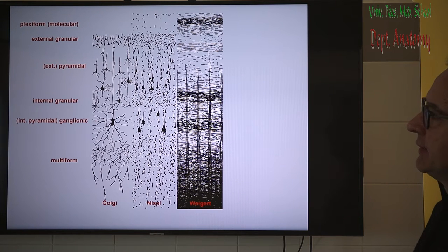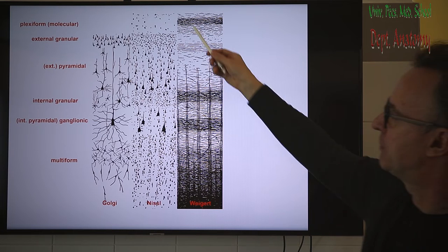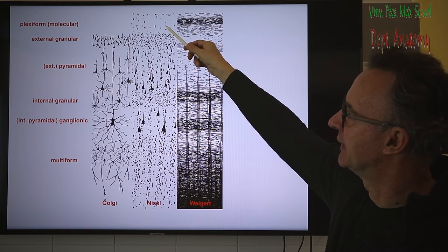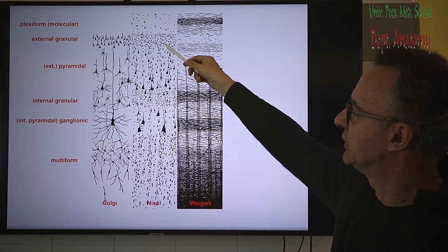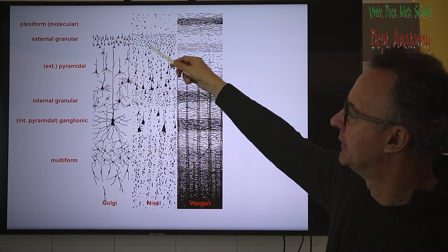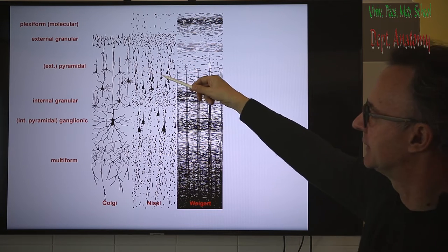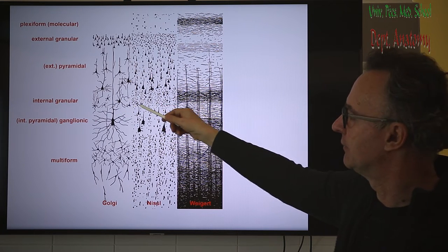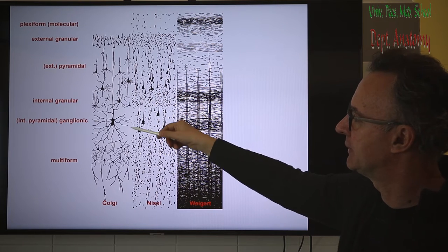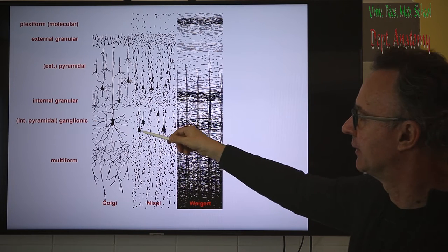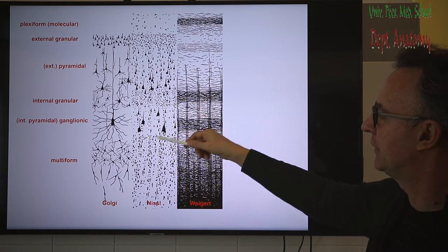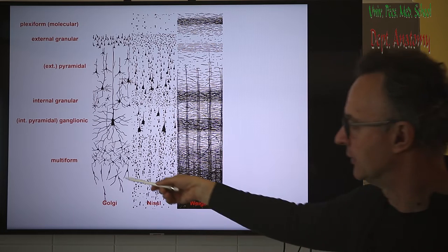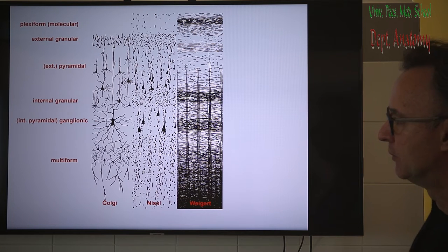Histologically, the neocortex has six layers. The uppermost, most superficial, is the plexiform or molecular layer, relatively poor in cells. The next, rich in cells, is the external granular layer. Then we have the external pyramidal layer with small pyramidal cell dominance. Then the internal granular layer with interneurons other than pyramidal cells. Then the internal pyramidal layer with larger pyramidal cells — this is the fifth layer. And the multiform layer is the thickest at the bottom, close to the white matter, located inside similarly to the cerebellum.